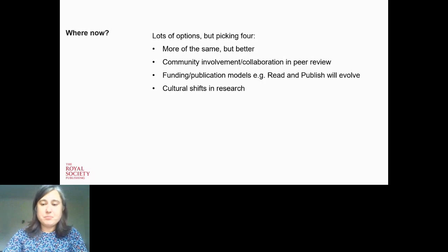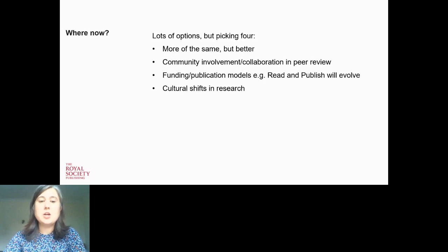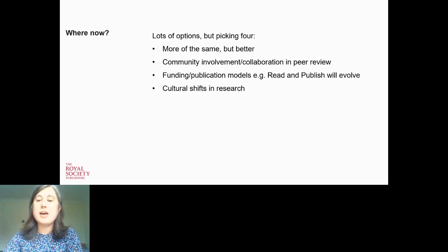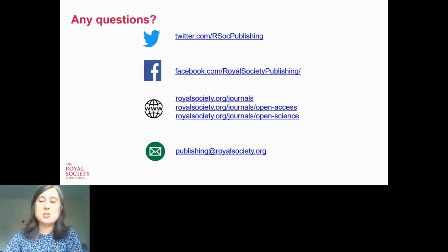Some platforms have also developed that allow authors to submit sections of papers — for example just an introduction or just the methods — rather than the whole paper, which may result in faster and ultimately better review. We expect funding models to evolve and grow. Finally, a more collaborative research culture would help open science. For this to happen, funders, institutions, and other actors in the scholarly research ecosystem need to ensure they reward science for the greater good rather than rewarding science centered on competition.